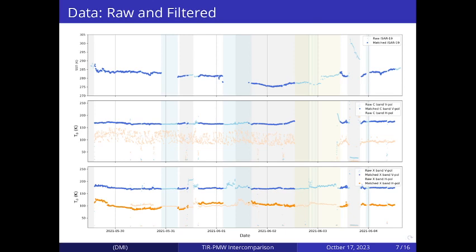The ISARs are designed to close off the mechanism in case of rain when it is detected to protect the instrument. So whenever there was rain, there are gaps of the infrared data.